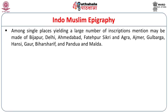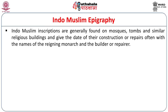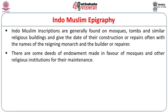Among single places yielding large numbers of inscriptions, mention may be made of Bijapur, Delhi, Ahmedabad, Fatehpur Sikri, Agra, Ajmer, Gulbarga, Hansi, Gaur, Bihar Sharif, Pandua, and Malda. Indo-Muslim inscriptions are generally found on mosques, tombs, and similar religious buildings, giving the date of their construction or repairs, often with the names of the reigning monarch, the builder, and the repairer. There are some deeds of endowment made in favor of mosques and other religious institutions for their maintenance. Epitaphs sometimes appear on mosque inscriptions relating to graves. Another kind of Indo-Muslim epigraph records the construction and repairs of forts, bastions, fort walls, gateways, roads, and granaries.